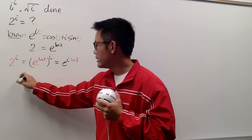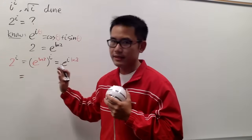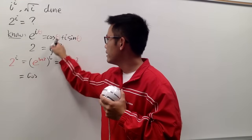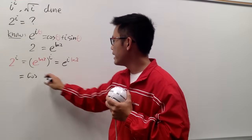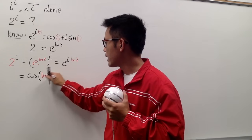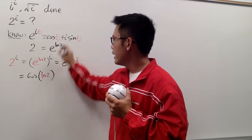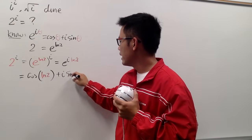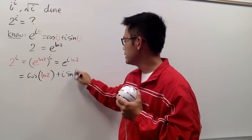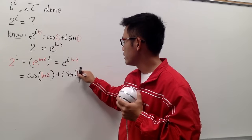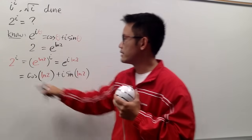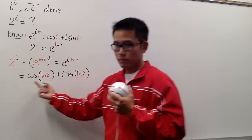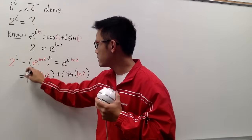So now I'm going to write this down. This is equal to cosine — and the theta is ln 2, so let me write that right here — and then we add i sine of theta, which is of course this ln 2. And this is how we express 2 to the i.